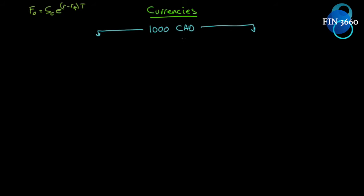The first thing we can do: we have a thousand Canadian dollars. Let's take those thousand dollars and exchange them at whatever the spot price is. That gives us 1000 × S₀ in US dollars — we can convert at whatever the spot price is. And over some period of time T, those US dollars will grow at the US rate of return R for the period T.